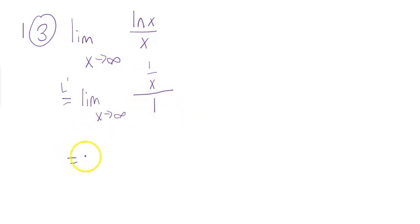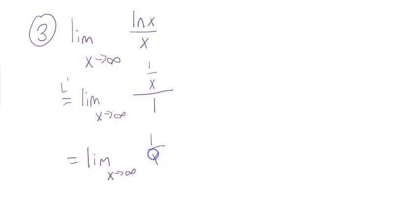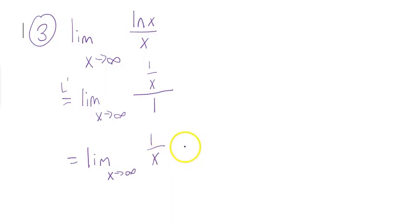Now I'm just simplifying — not using L'Hôpital's rule again. As I go to infinity, 1 over x over 1 is just 1 over x. This is a small over big situation, so small over big means my limit is 0.